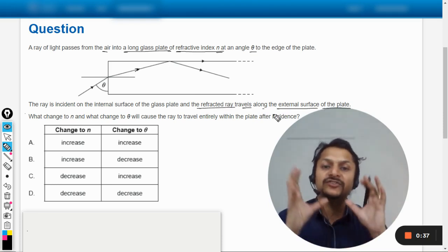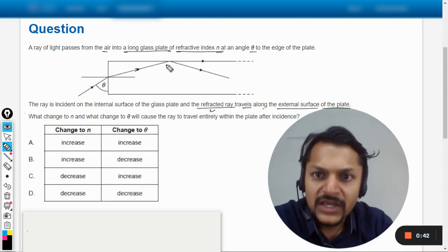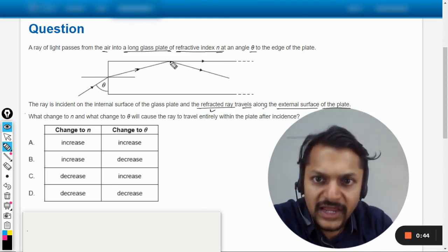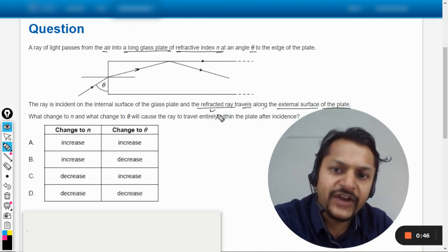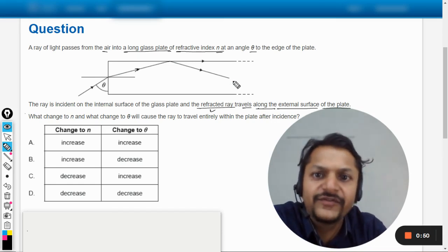So my dear students, this statement is really very confusing. They're calling this ray as refracted, but it is not refracted, you see. So this light, if you even call it refraction, fine anyways, it travels along the surface.